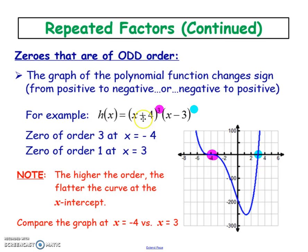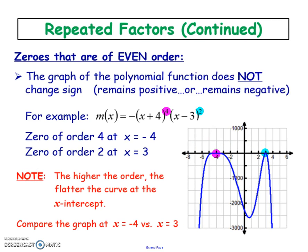If you have an odd order, notice that your graph actually cuts through the x-axis — it crosses over. Versus if you have an even degree, the graph will approach the x-axis and touch it but then go back down, so it doesn't actually cross.